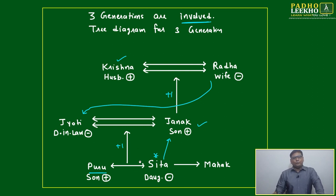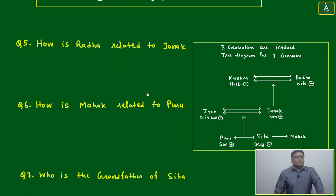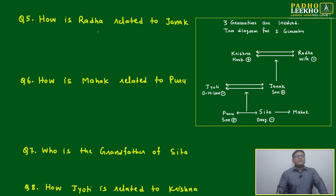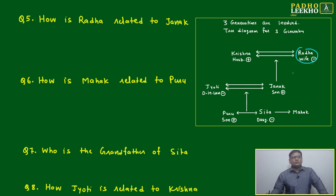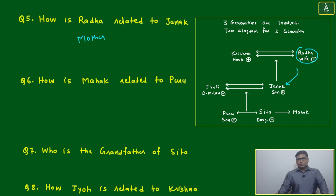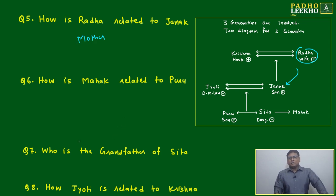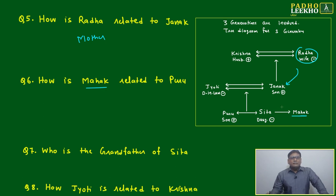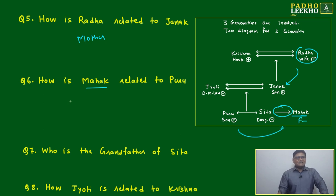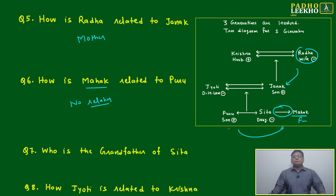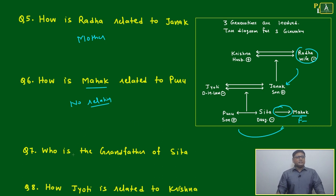Now let's read the questions. How is Radha related to Janak? No doubt, Radha is the mother of Janak. How is Mahak related to Puru? Mahak has a single-sided arrow — Mahak is a friend of Sita. Puru is the brother of Sita. Between a friend and a brother, there is no blood relation, so Mahak and Puru have no relation.